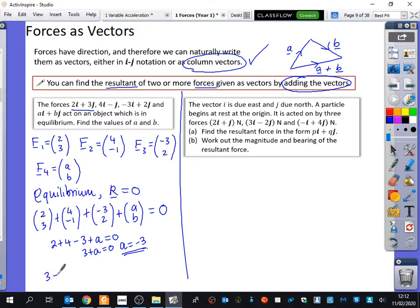And then from the other bit, we've got 3 minus 1 plus 2 plus B is equal to zero. So that's 2 plus 3. That's 4 plus B is equal to zero. So B is equal to minus 4. If that's what the force was, they would all completely cancel each other out.